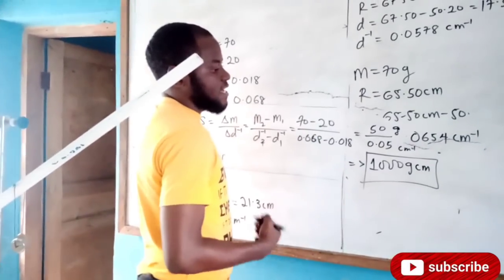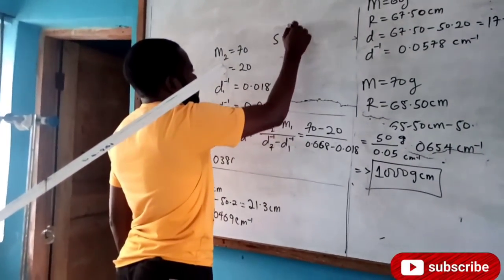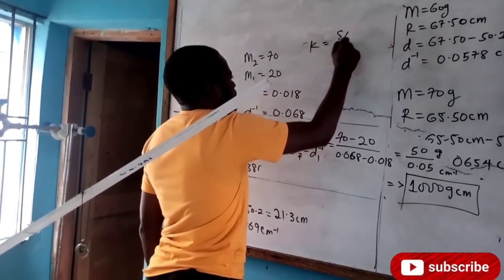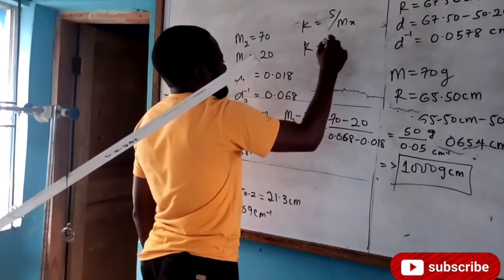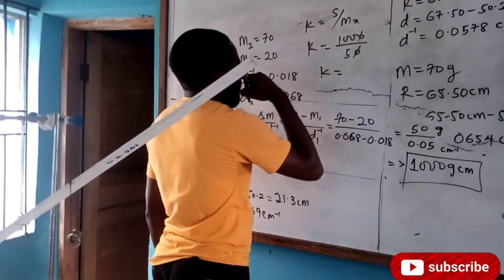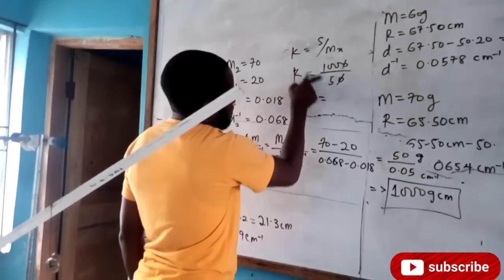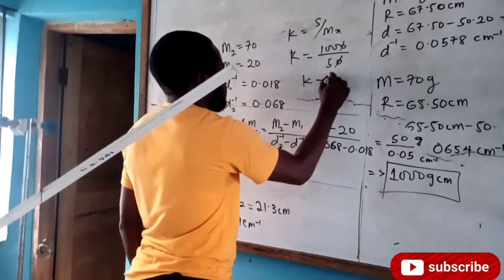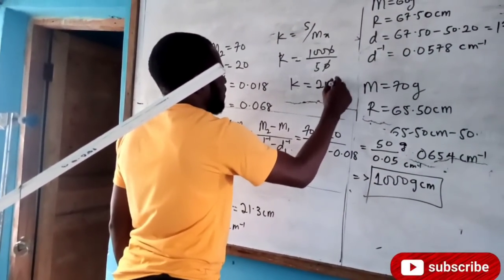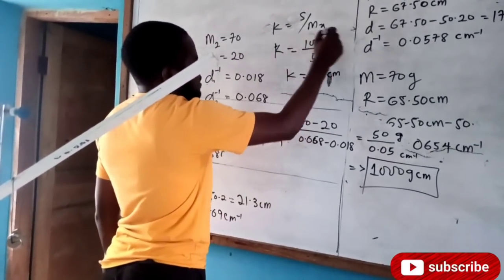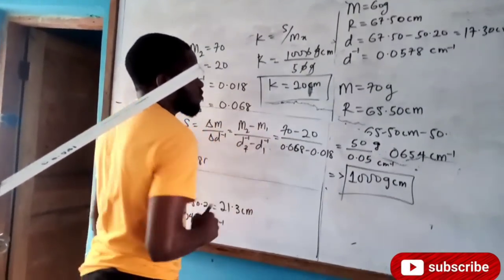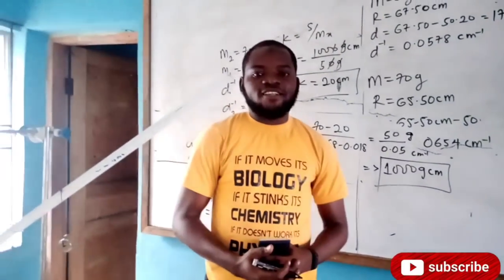We are asked to evaluate K = S over Mx. Our K = 1,000 divided by 50. Since slope is in gram·centimeter and Mx is in grams, gram cancels gram, so K = 20 centimeters. This is where we end today's class.